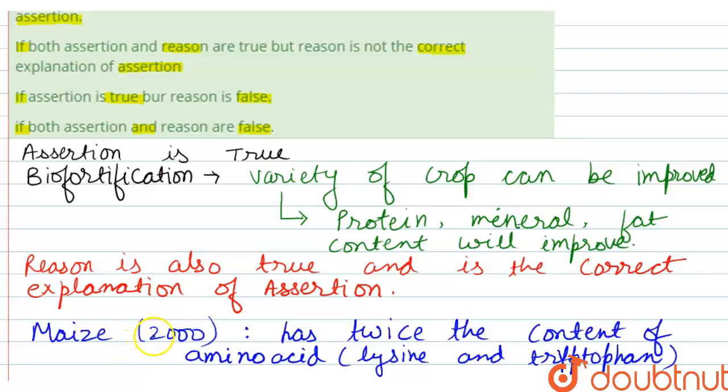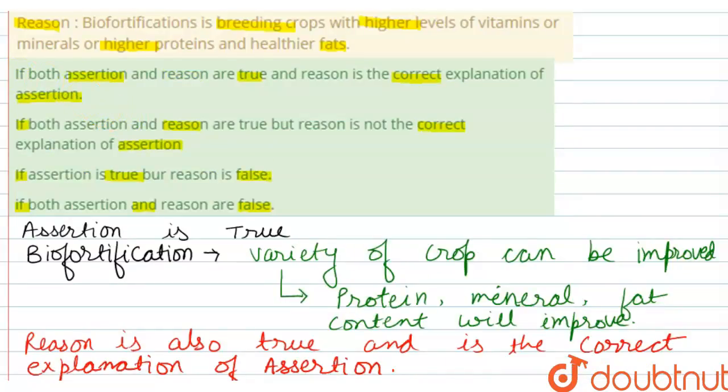So the correct option will be option A where both assertion and reason are true and reason is the correct explanation of assertion. Thank you.